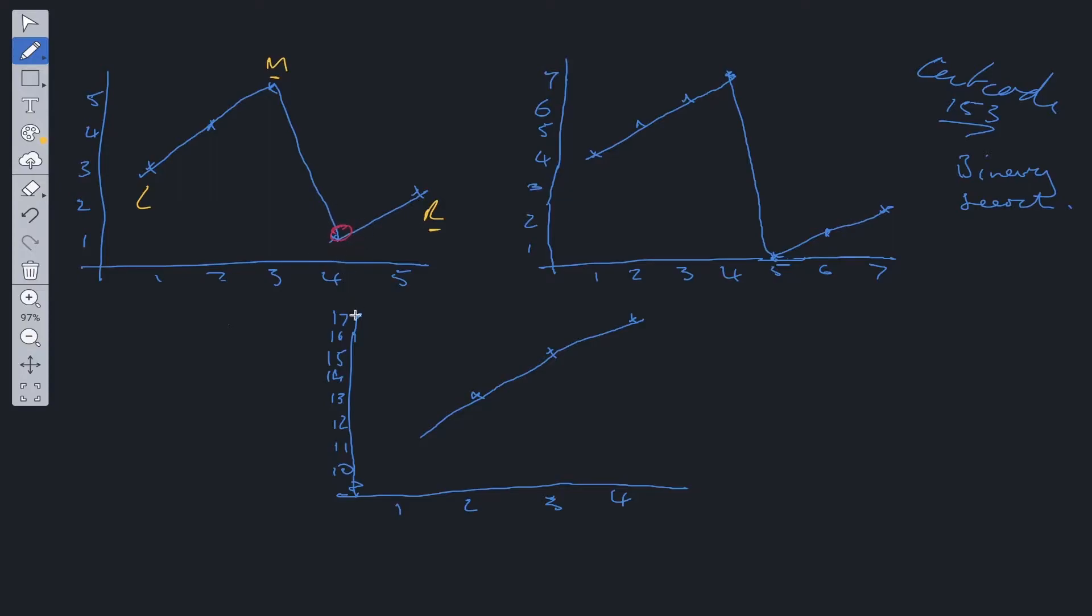If nums[right] is less than nums[mid], which in this case it is, we want to remove a portion of the nums array so it only contains the minimum and a shorter amount of numbers. So we allocate left to mid plus one.